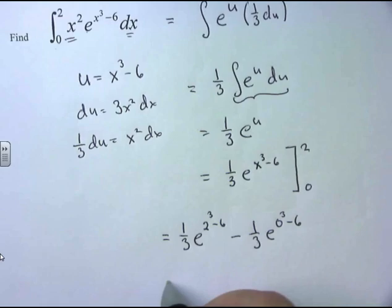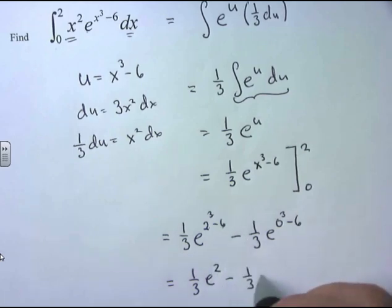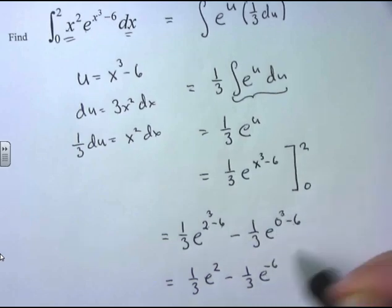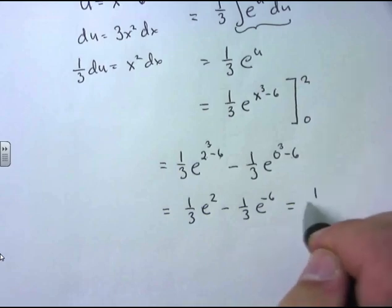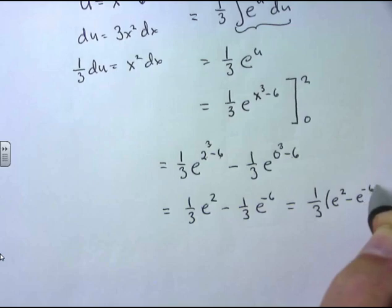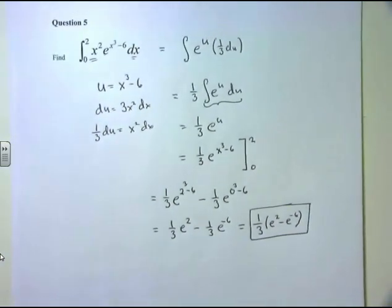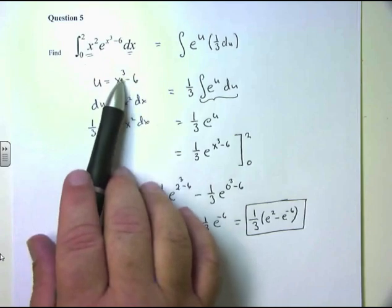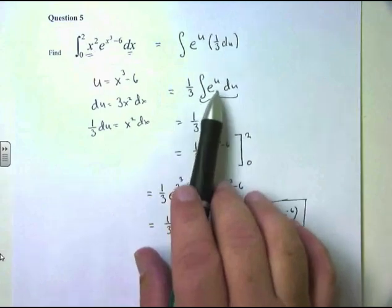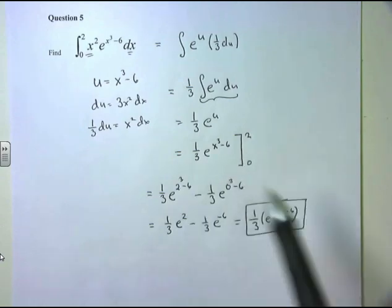Factoring out 1/3: the final answer is 1/3 times (e squared minus e to the negative 6). The whole focus of U-substitution — which is a very, very important technique in calculus — is that with the appropriate substitution, you turn the hard problem into an easier problem matching a formula you have memorized. After integrating, back substitute to get your solution. When you have bounds, plug in top minus plug in bottom to get the numerical value.